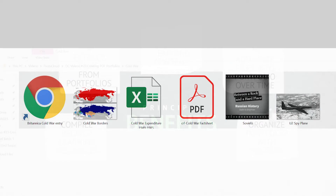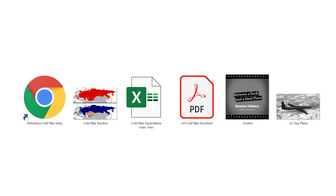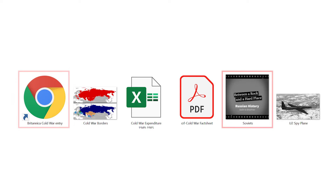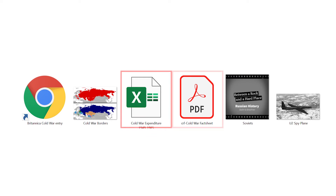In this example, a history teacher is putting together a folder of source material about the Cold War, which includes elements such as a video, a web page, a spreadsheet, and a PDF. They want their students to be able to extract the files from the portfolio if they need to use them in their work.